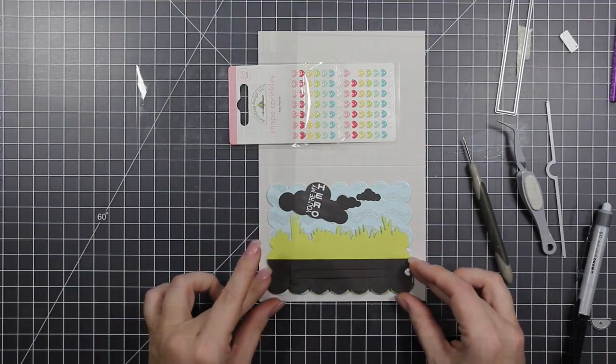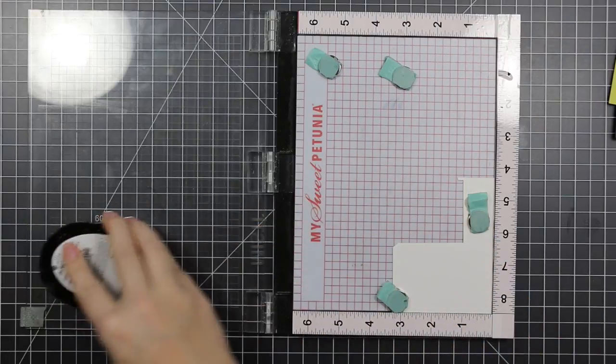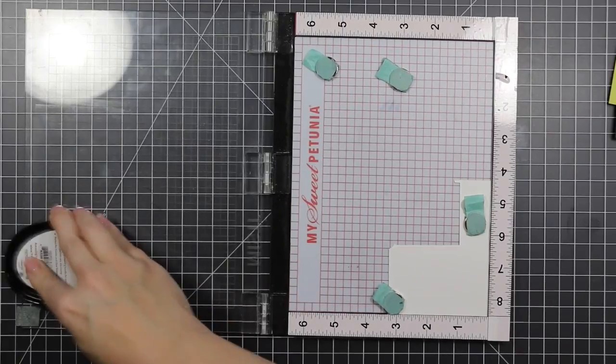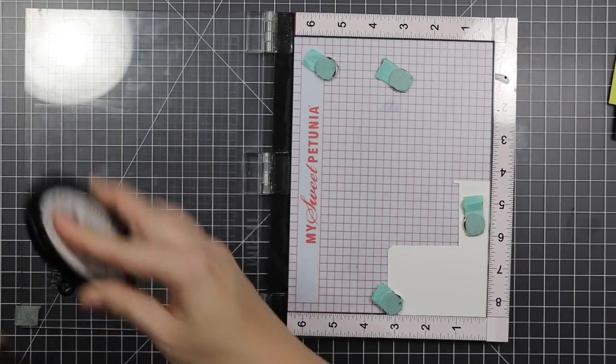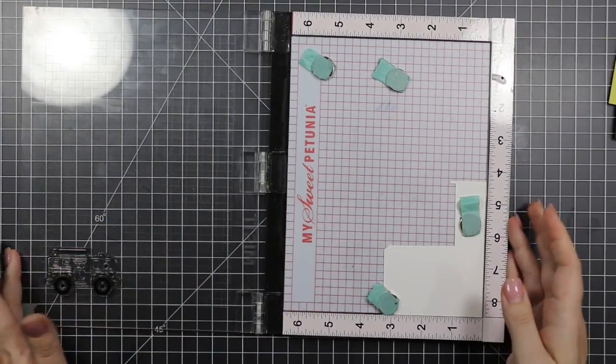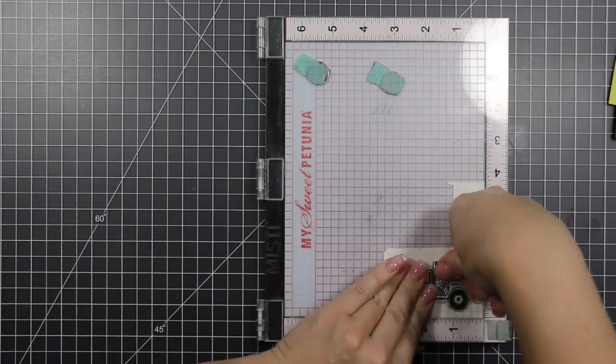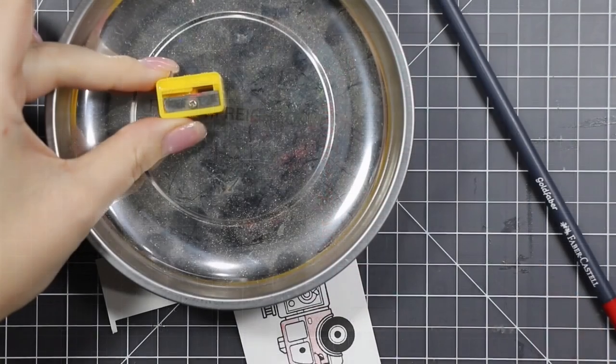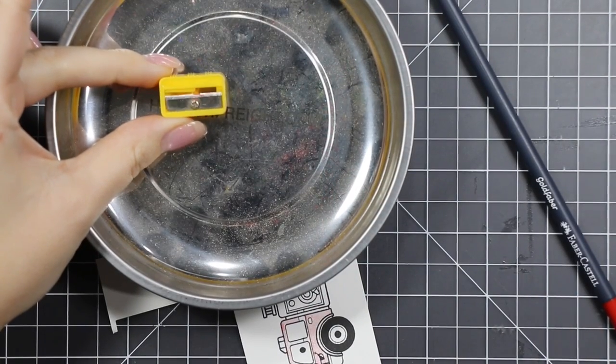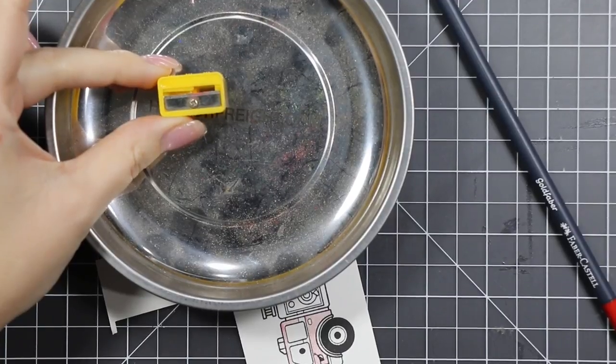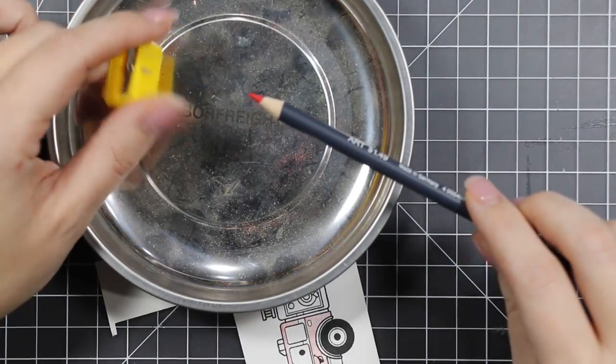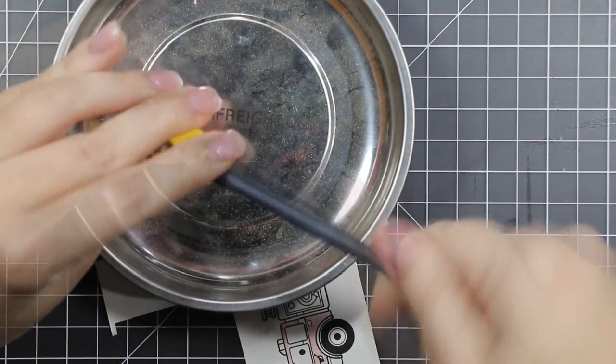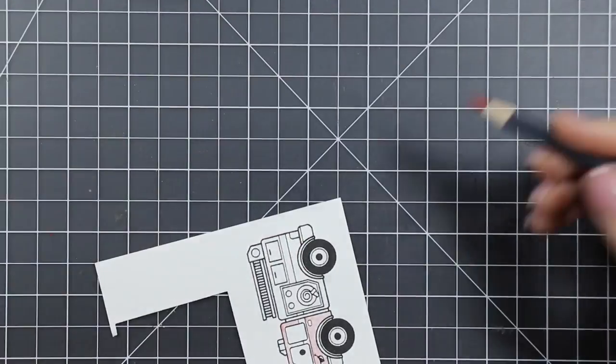I'm stamping with Your Next Stamp black olive ink the fire truck from the Fire Up the Fun stamp set on a piece of Neenah 110 pound cardstock. I plan on using my Goldfaber colored pencils. This is my favorite pencil sharpener. I have no idea where I got it and I'll probably never be able to purchase it again, but it makes the best colored pencil point, better than any electric sharpener.